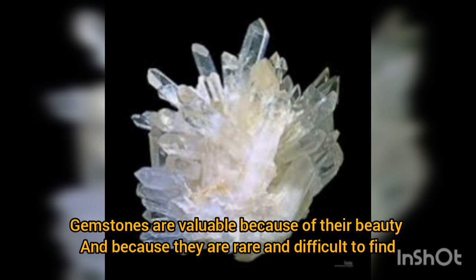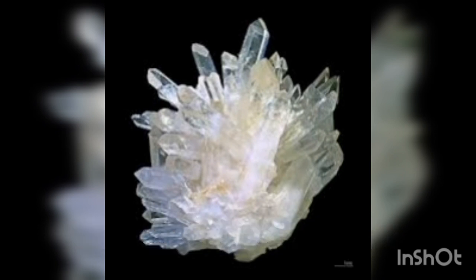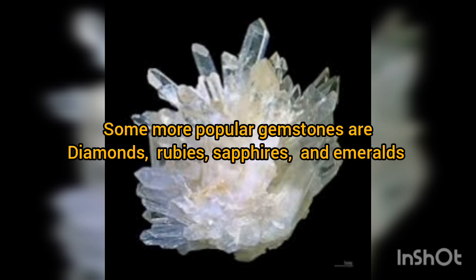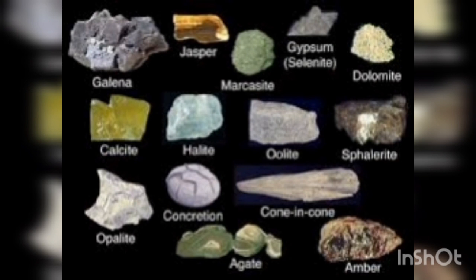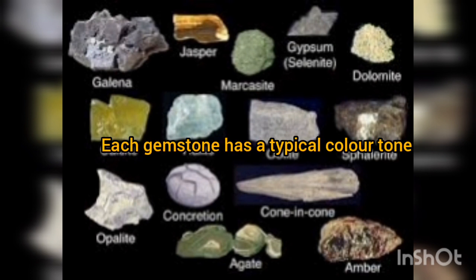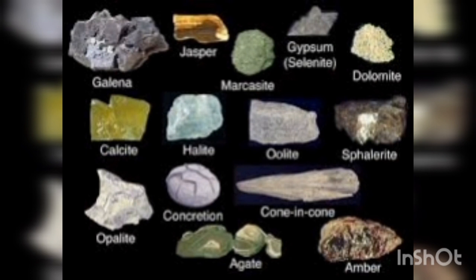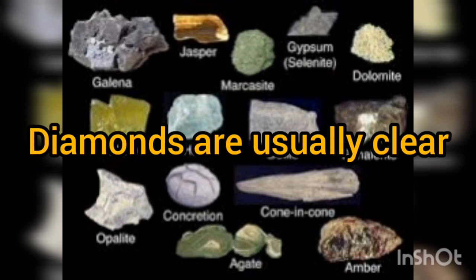Gemstones are also very expensive. Some popular gemstones are diamonds, rubies, sapphires, and emeralds. On the screen you can also see more examples of rocks and minerals: opalite, agate, dolomite, gypsum, and jasper, among others. Diamonds are usually clear, glassy, and almost colorless beautiful minerals.